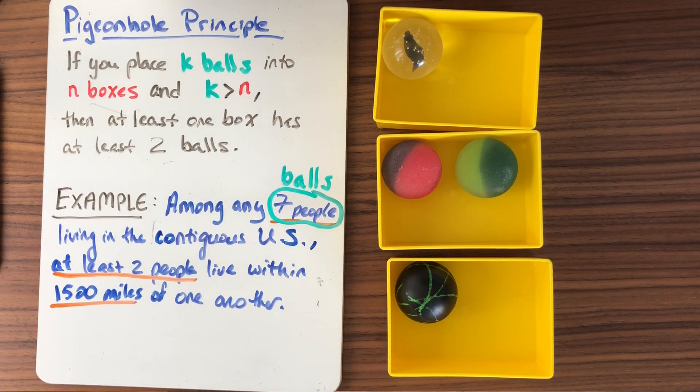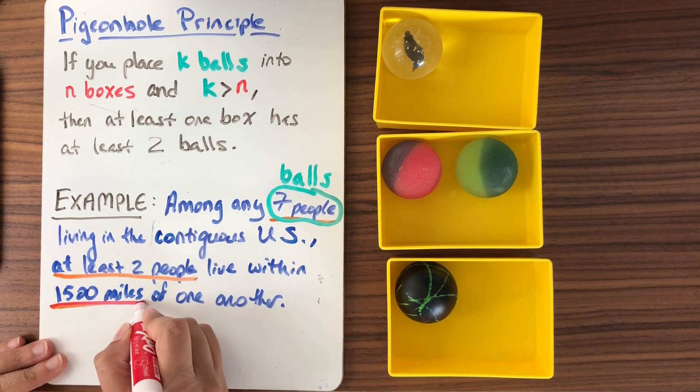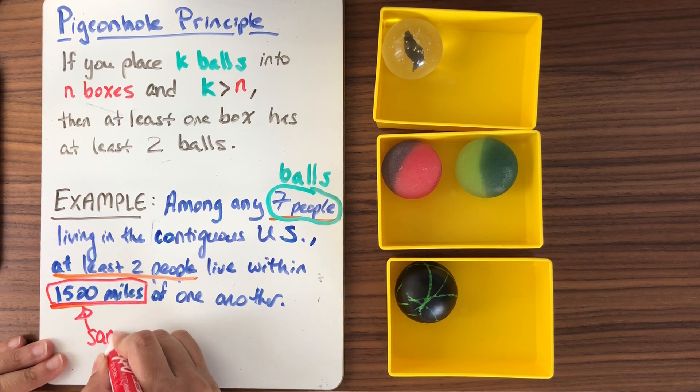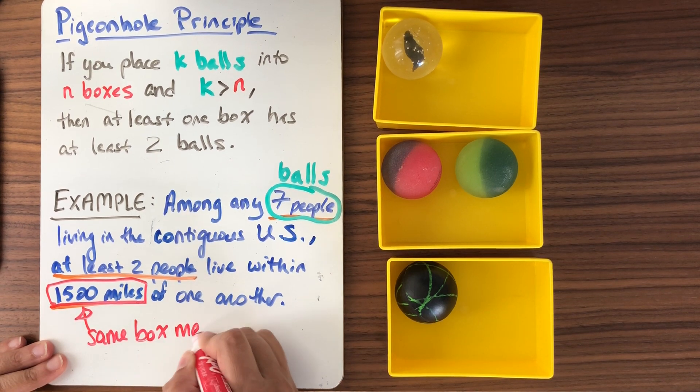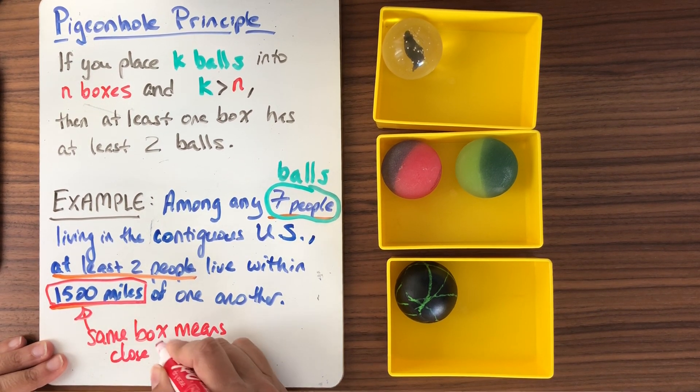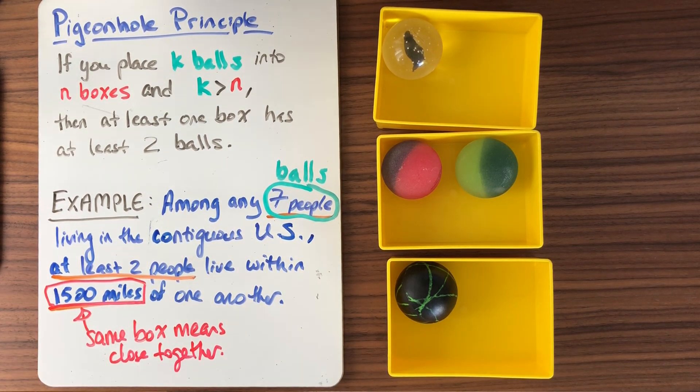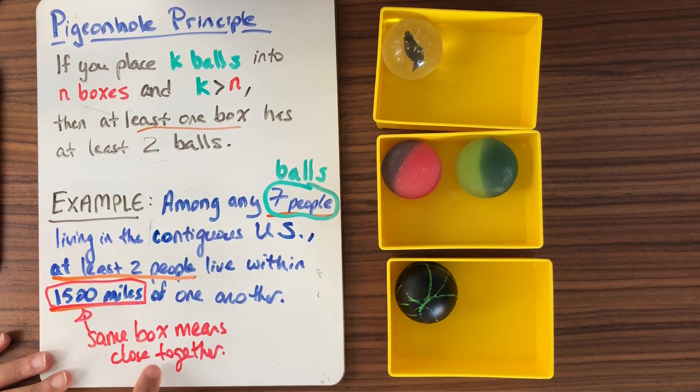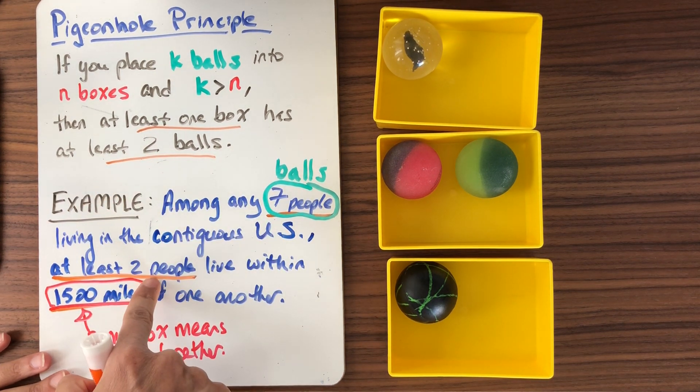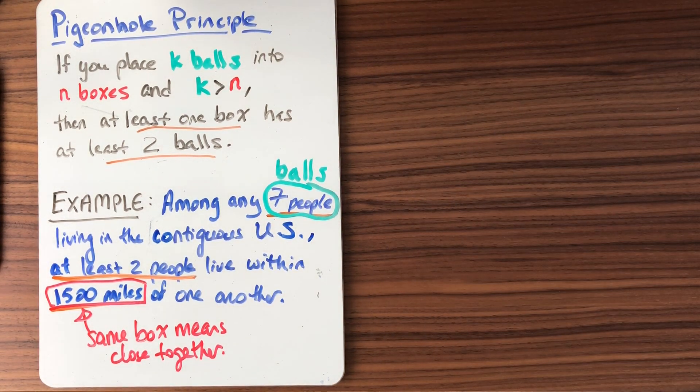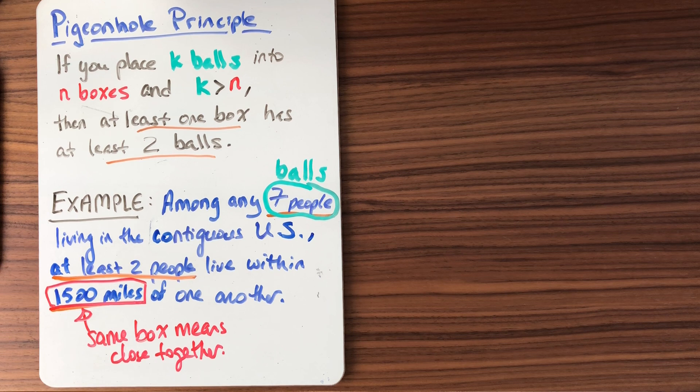How many boxes do I have? Well, I'm not really sure about that yet, but what are the boxes? So my boxes, I must put things in the same box. So any two things in the same box means they have to have this property. Same box means close together, within 1500 miles. How am I going to think about that box though? Well, how many boxes do I have?